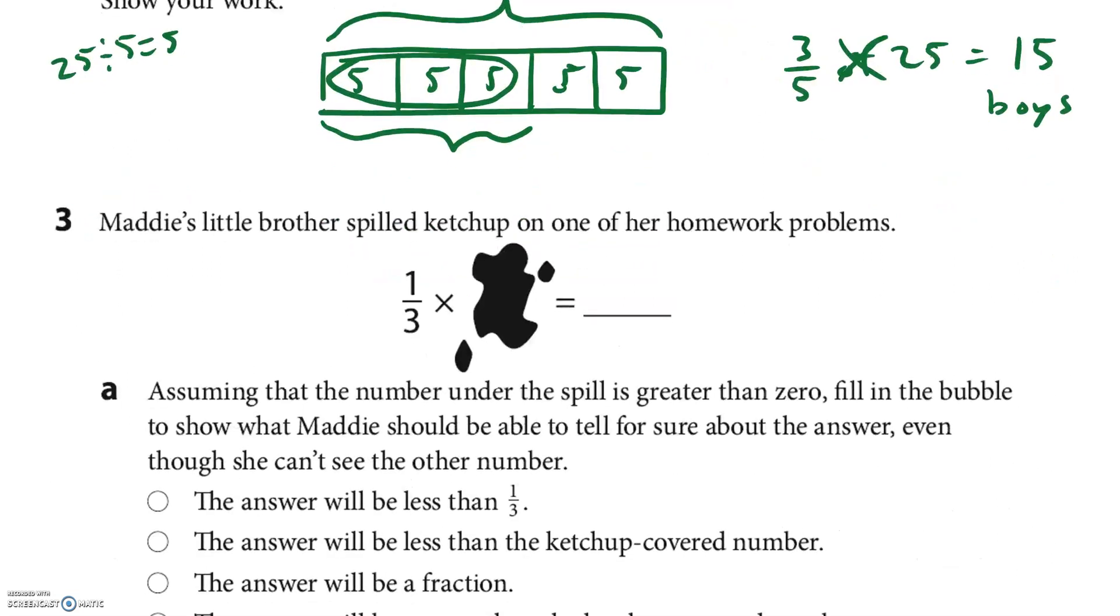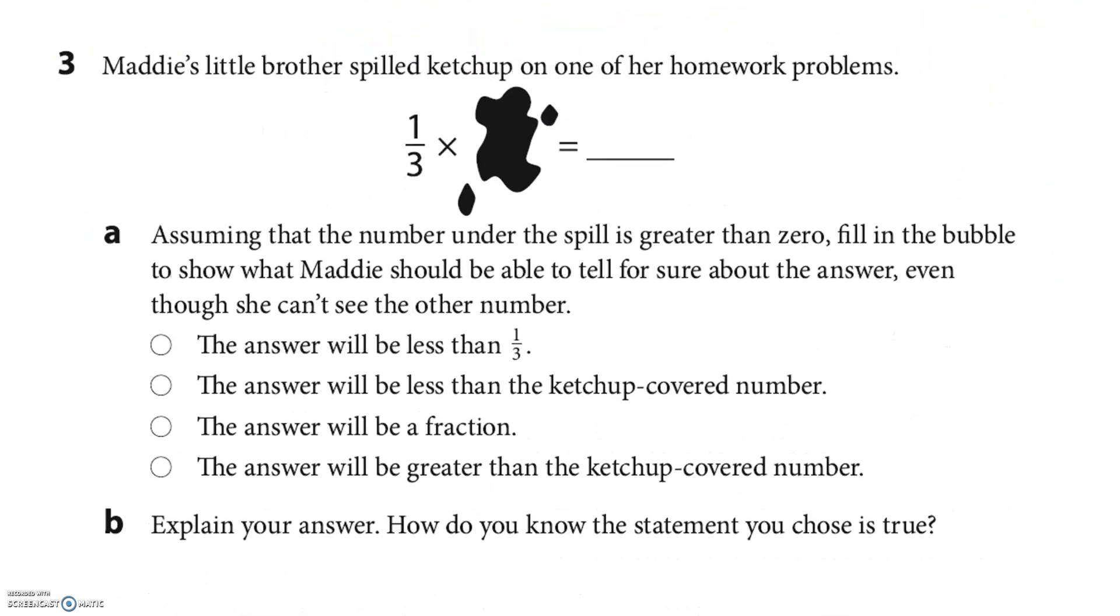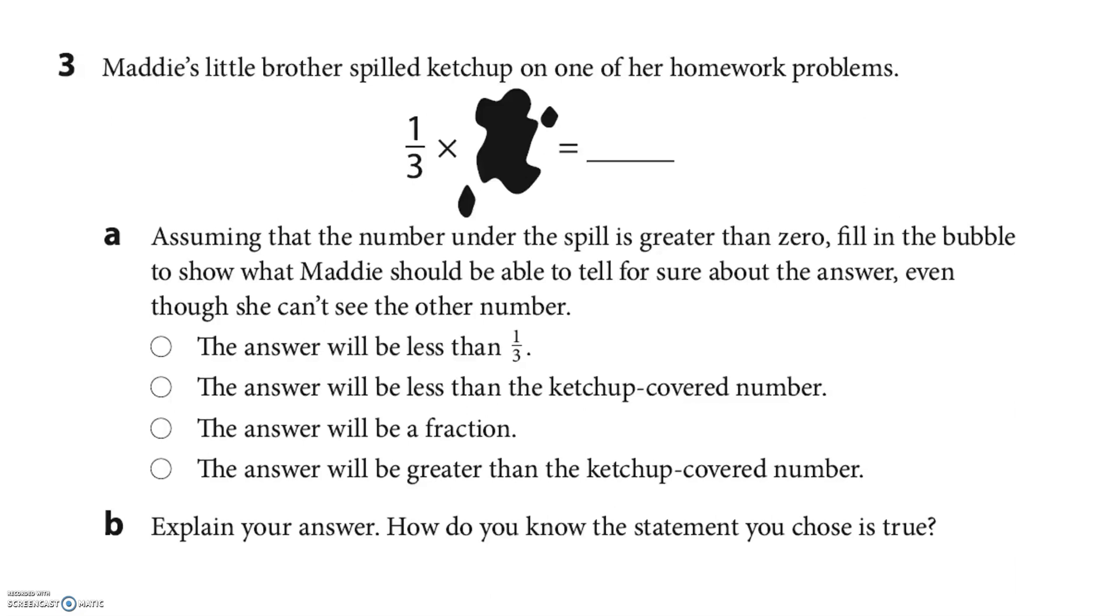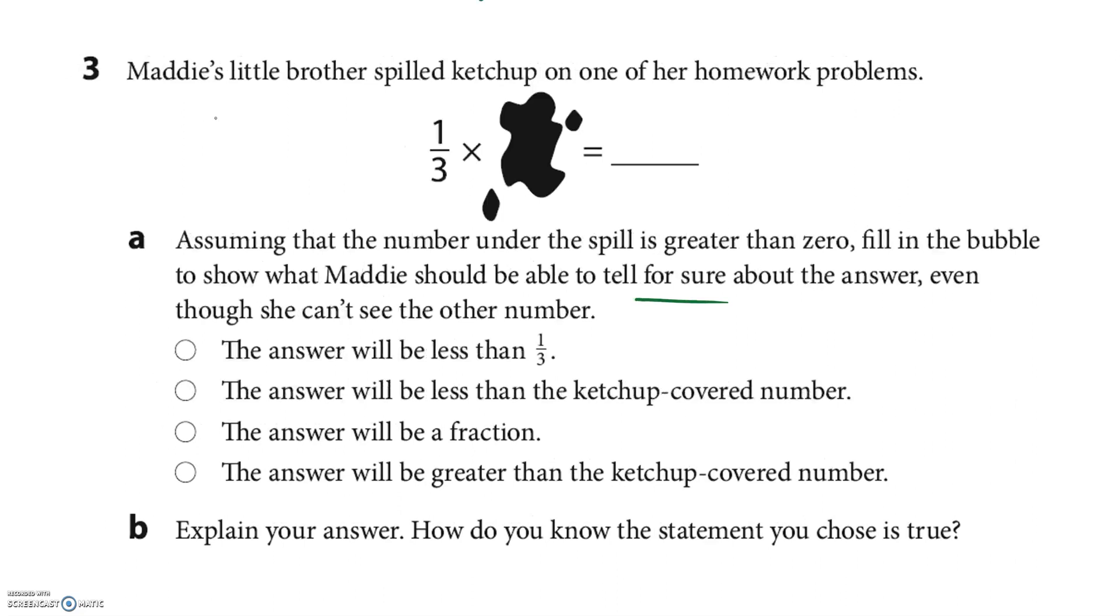Oh I love this problem. Maddie's little brother, oh I wonder if it's our Maddie. Maddie's little brother, no way, spilled ketchup on one of our homework problems, how could he? Assuming the number under the spill is greater than zero, so it can't be zero, fill in the bubble to show what Maddie should be able to tell us for sure about the answer, even though she can't see the other number. So let's just, I'm gonna pick a couple numbers. What if it's 1? 1/3 times 1 equals 1/3. Okay, this is still the simplest one right now. The answer will be less than 1/3. Well if we use 1, is that less than 1/3? Nope, that doesn't work.